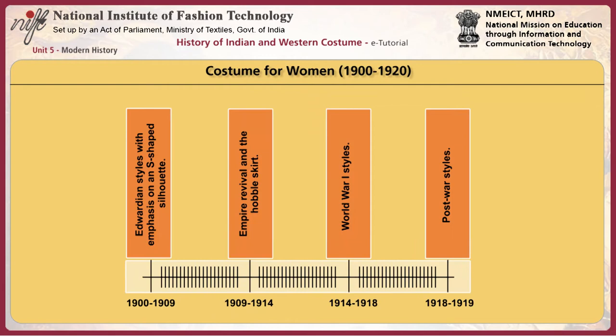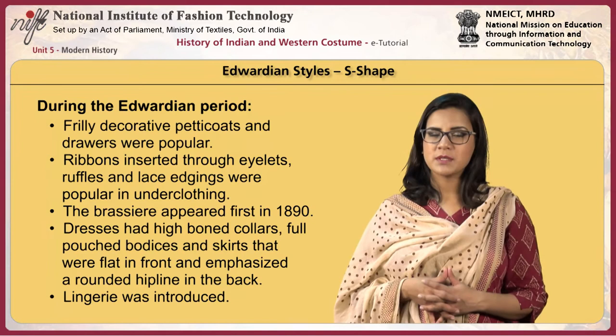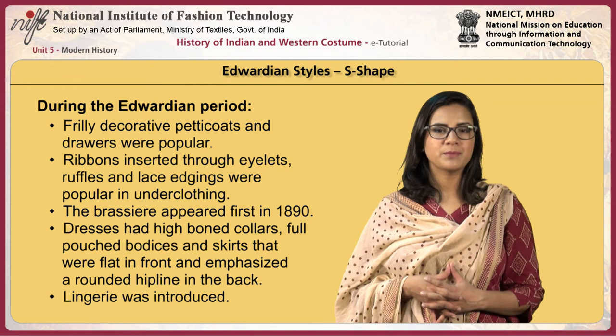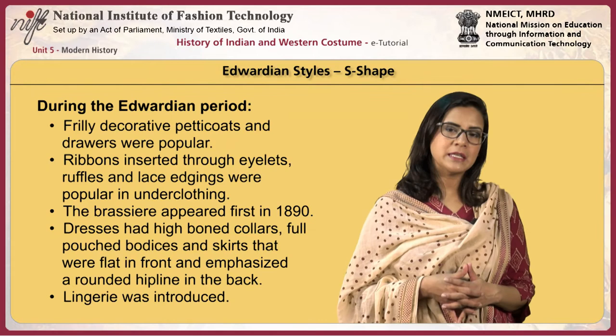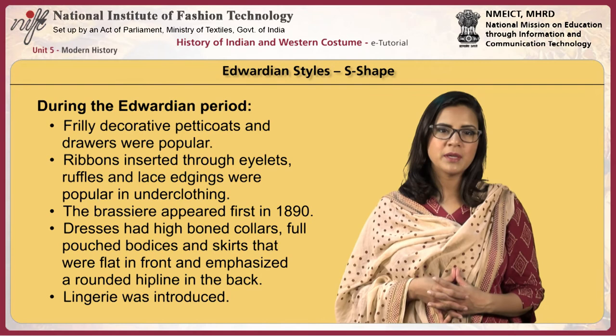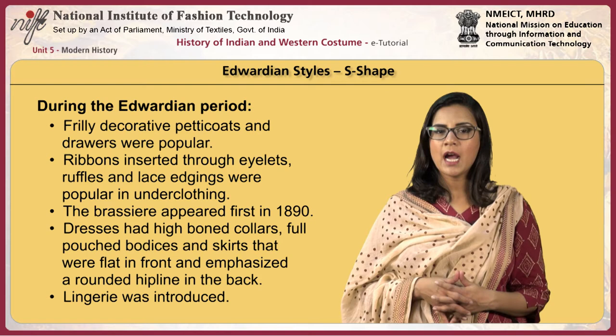The costumes for women varied according to the period, as shown in the timeline. During the Edwardian period, the emphasis was on the S-shaped silhouette. Frilly decorative petticoats and drawers continued to be popular. Ribbons inserted through eyelets, ruffles and lace edgings were popular in underclothing. The brassiere appeared first in 1890 and gradually became a basic item of underwear for adult women.